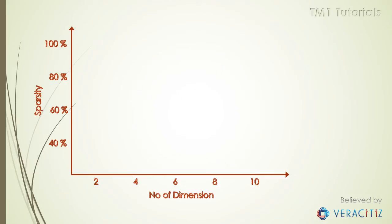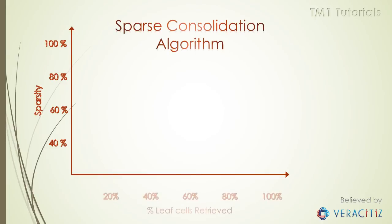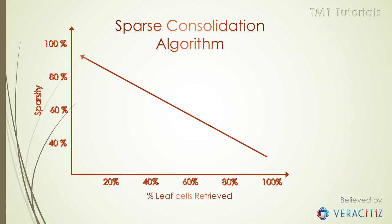In general, the sparsity of cube increases exponentially as the number of dimensions increases in cube. As we saw earlier, sparse consolidation algorithm retrieves non-zero leaf cells. Hence percent of retrieved leaf cells is inversely proportional to sparsity.